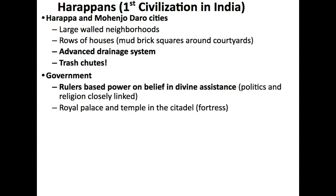This group, besides establishing cities, developed government — who's in charge and how do they get and keep that power. The early government of the Harappan people had rulers whose power was based on the belief in divine assistance. It's not the same as the Egyptians; it's much closer to our Islamic civilizations we talked about. It's theocratic in a lot of ways because politics and religion are closely linked. Whoever's in charge, whatever religion they practice is going to be the religion of the people, at least for the most part.